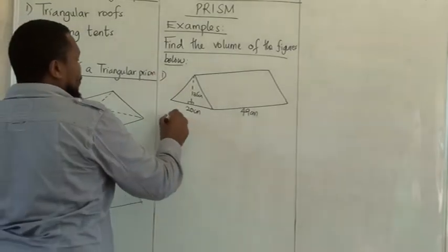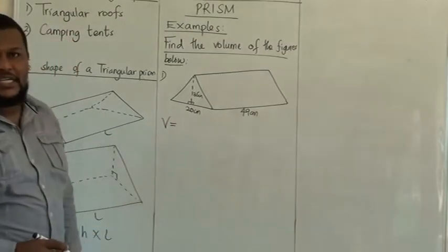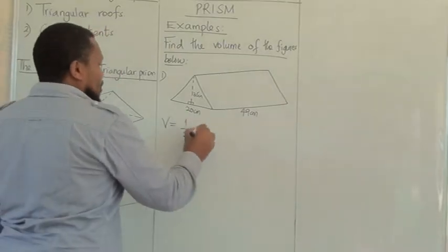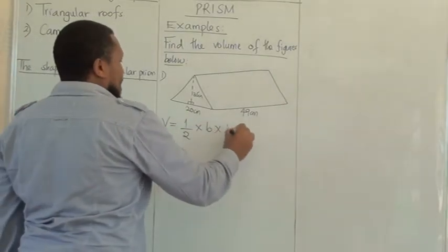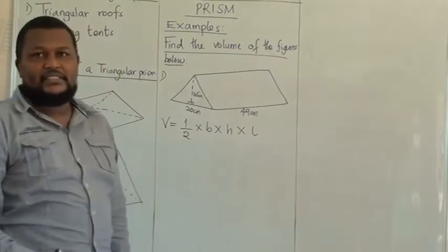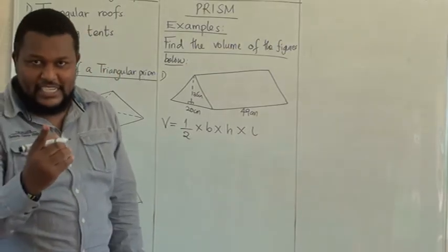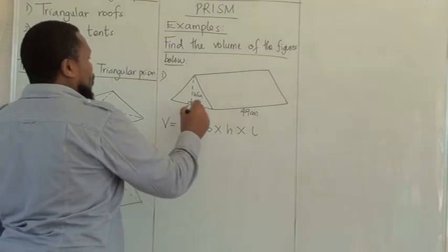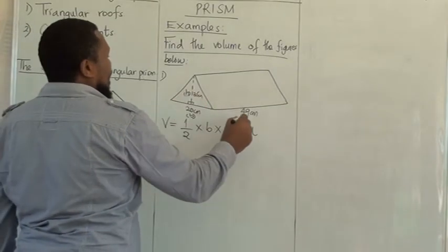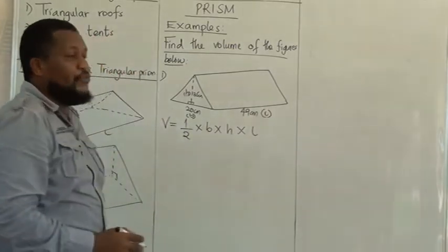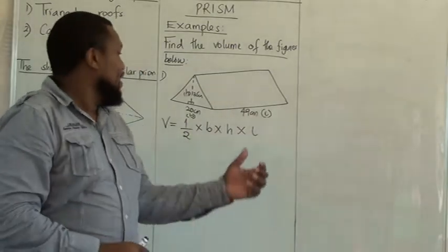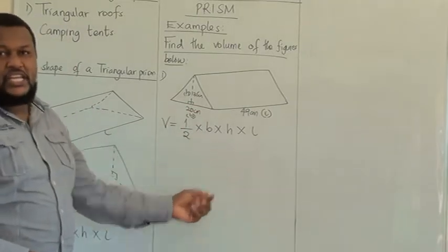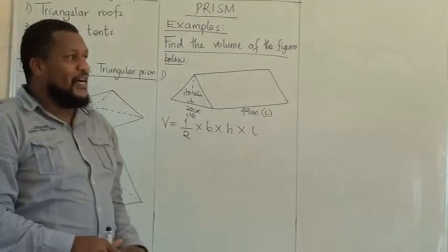First of all, we are going to state the formula. I know you are stating with me: a half times base times height times length. Is that what you have stated? Correct. We are having the base, the height, and the length. If you label them there from the figure, then it is easy for you now to substitute using the real numbers.